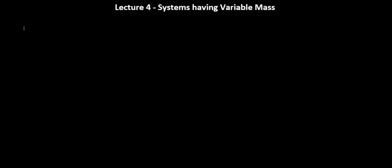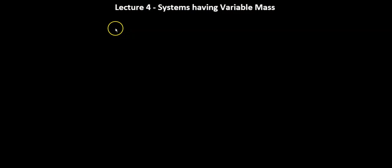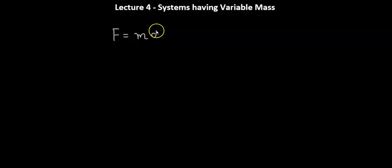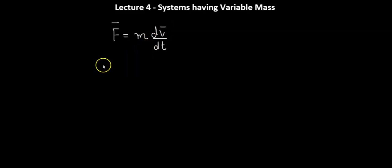Hello, welcome back to lecture number four. In today's lecture, we're going to consider systems having variable masses. Up until now, we have worked on various problems using Newton's second law of motion to find our equations of motion, using F equals m dv over dt. This equation is a vector equation, and it is true only if the mass m is constant.